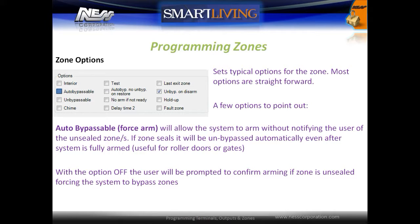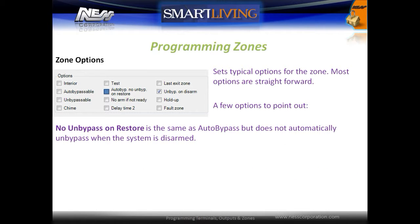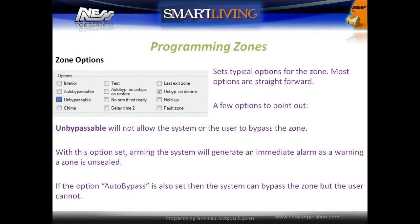The auto bypassable option allows the system to be armed without notifying the user that the zone is unsealed. If the zone is sealed, it will be unbypassed automatically even after the system has been fully armed — useful for roller doors and gates. With this option off, the user will be prompted when arming if the zone is unsealed. The no unbypass on restore option is the same as auto bypass but does not automatically unbypass the zone when the system is disarmed. The unbypassable option will not allow the system or user to bypass the zone at all. With this option set, arming the system will generate an immediate alarm warning if the zone is unsealed. If auto bypass is also set, then the system can bypass the zone but the user cannot.